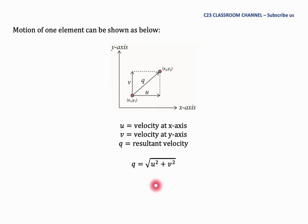To calculate the resultant velocity, we could use common trigonometry equation, so we have q equals square root of u squared plus v squared, as shown here.